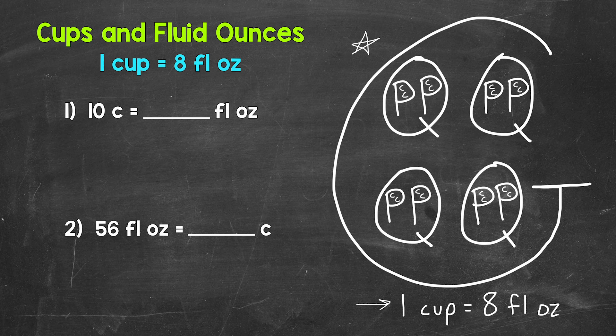Starting with number one, we have 10 cups equals how many fluid ounces? Well, each cup equals eight fluid ounces, so we have eight fluid ounces ten times.